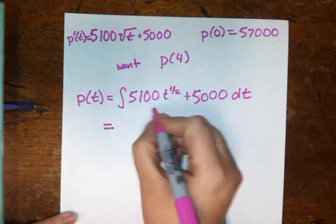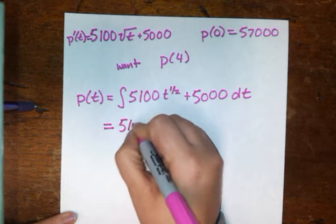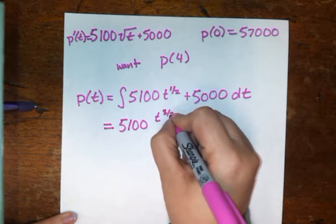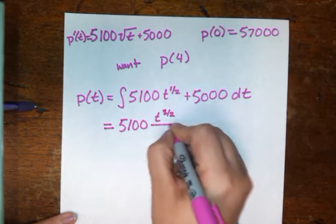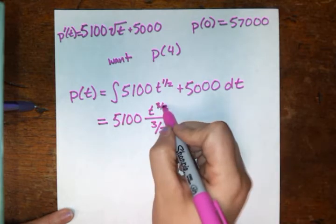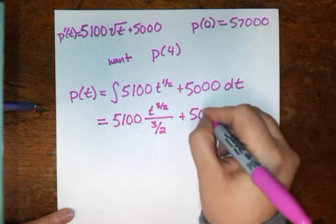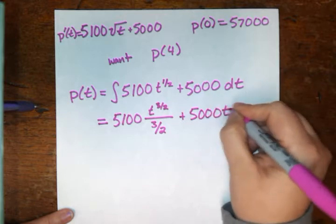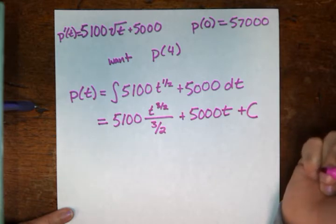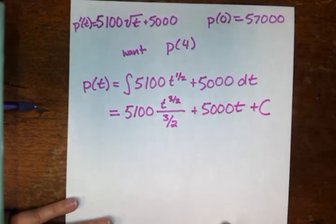So the integral of 5,100t to the one-half, that's going to be 5,100t to the three-halves. I'm adding one to my exponent, and then I'm putting that over three-halves in the denominator. So whatever your exponent changed to, you're going to put that in the denominator, plus 5,000t, plus some constant c. We don't know what that is, but we have ways to figure that out.